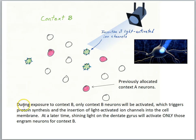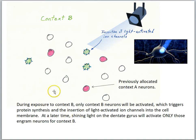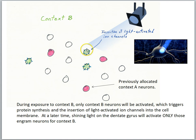During exposure to context B, only context B neurons are activated, and because they've been engineered, this triggers protein synthesis and insertion of light-activated ion channels into the cell membrane. At a later time, shining light on those cells in the dentate gyrus will activate only those engram neurons for context B. The pink cells respond to context A, the green ones to context B, and you can control when those cells insert their light-activated channels — allowing control of the context B cells by shining light on them.